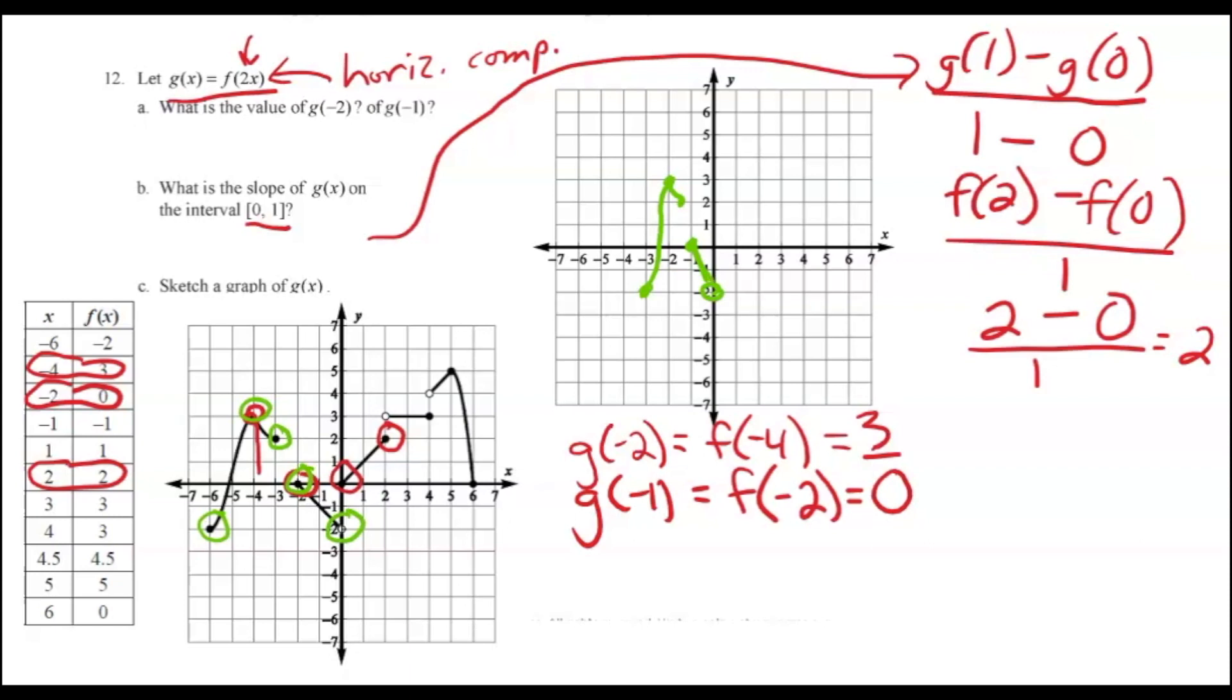Then, we have the point 0, 0. Again, if you have 0, you'll still get 0. So that's not changing. We have the point 2, 2. So that'll become 1, 2. So this piece of the graph goes like this.